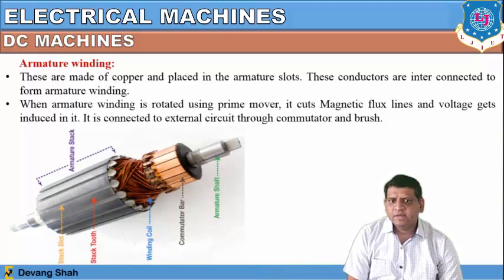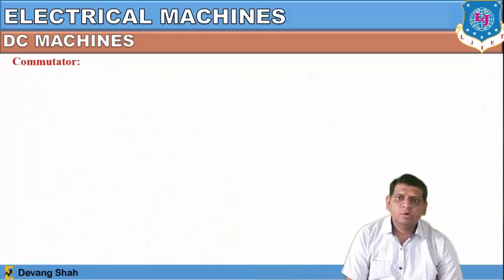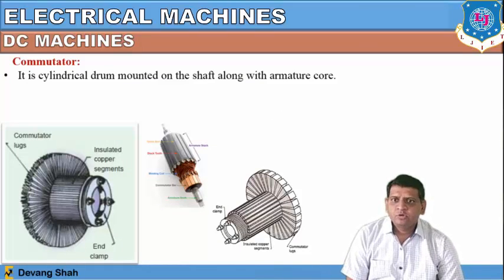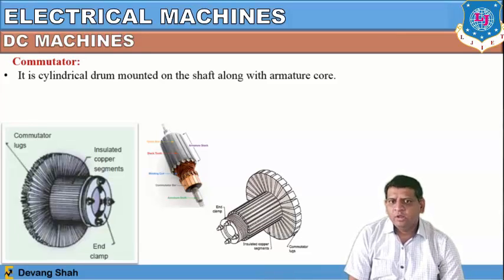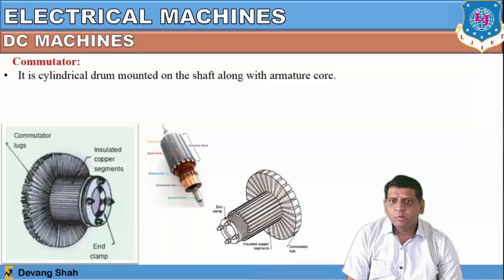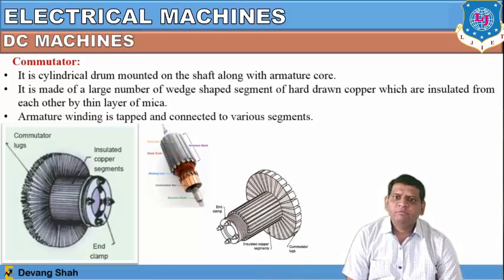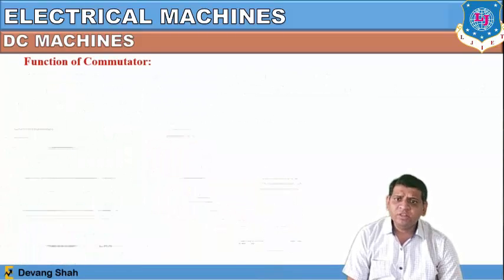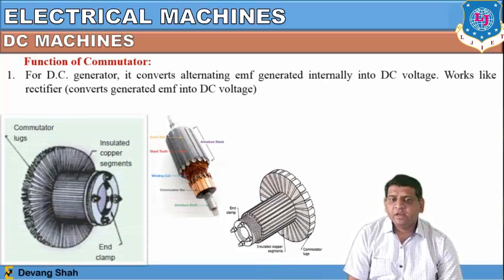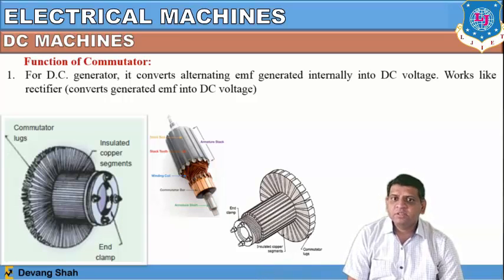The commutator is a cylindrical drum mounted on a shaft along with the armature coil. When enlarged, you can see the commutator lugs and insulated copper segments. It is made of a large number of wedge-shaped segments of hard-drawn copper, insulated from each other by a thin layer of mica. The armature winding is tapped and connected to various segments. For a DC generator, the commutator converts the alternating EMF generated internally into DC voltage — it acts as a rectifier. For a DC motor, it helps produce unidirectional torque.